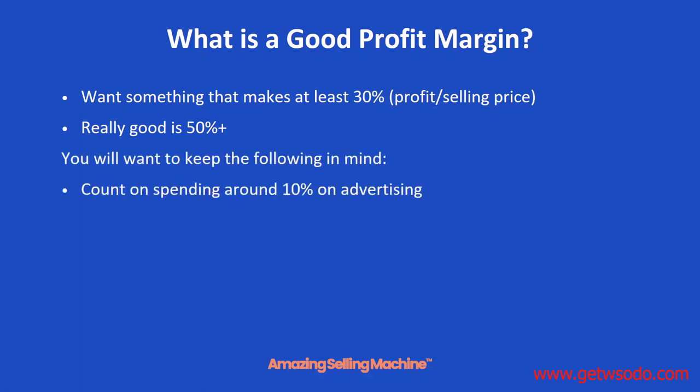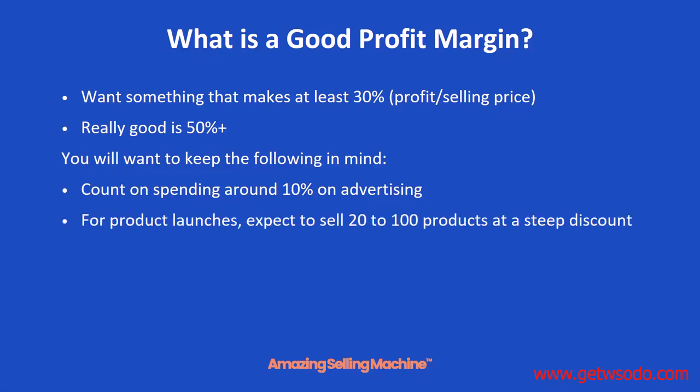You'll want to keep the following in mind as well. Count on spending around 10% on advertising throughout the course of your business, because you'll always want to keep bringing in high quality traffic for your products. And for product launches, expect to sell the first 20 to maybe 100 products at a steep discount in order to really get traction and get your product selling well. We'll talk more about that during Module 6 when we start planning your launch blitz and rank.